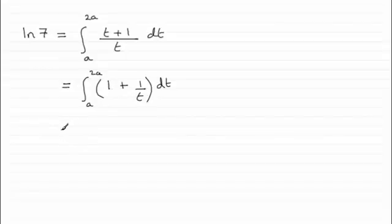So we can integrate each of these terms, the integral of 1 is just going to be t, and the integral of 1 over t, well that's going to be the natural log of t. We don't need to put this in mod signs, because we're told that a is going to be a positive constant.